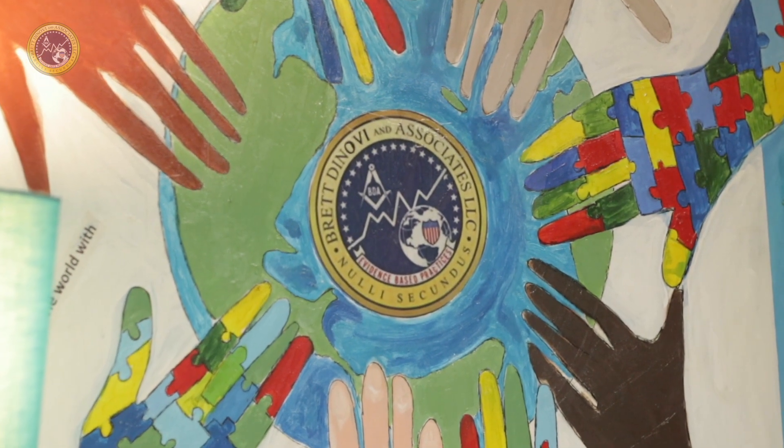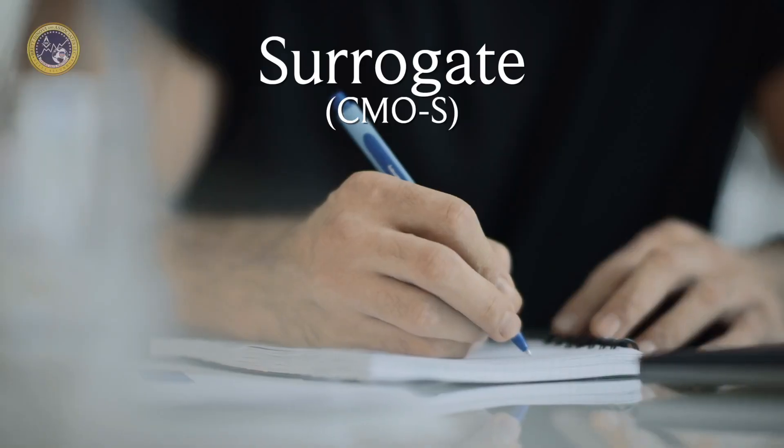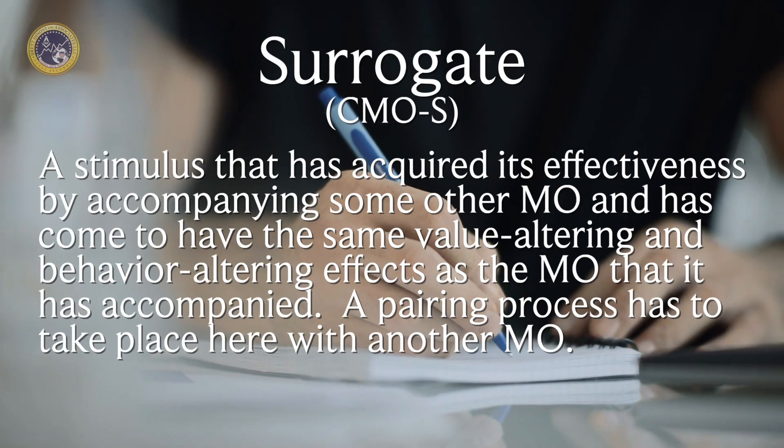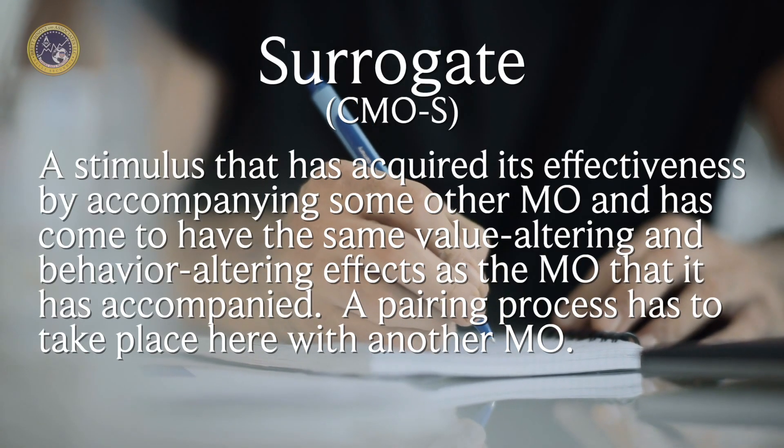The first out of three that we're going to talk about is a surrogate. In very simplistic terms, what this means is that some sort of stimulus has been paired or accompanied another motivating operation enough times that the individual is associating those two things together, meaning that the value of that new novel stimuli has gained the same motivating properties of whatever that original motivating operation was.